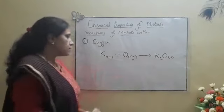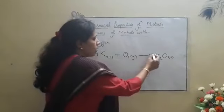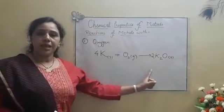So in order to balance it, if we write 4 here and 2 at the front of K2O, we will get a balanced chemical equation.